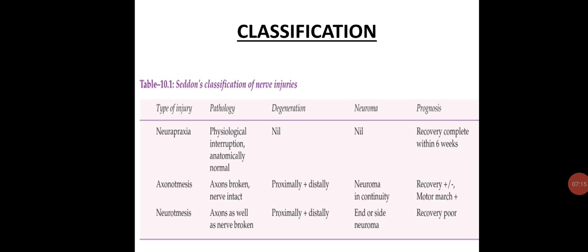Classification: Seddon classified nerve injuries into three types — neuropraxia, axonotmesis, and neurotmesis. Neuropraxia is a physiological disruption of conduction in the nerve fibers with no structural changes. Recovery occurs spontaneously within a few weeks (within six weeks) and is complete. In axonotmesis, the axons are damaged but the internal architecture of the nerve is preserved — Wallerian degeneration occurs. Recovery occurs spontaneously but may take many months, and complete recovery may not occur.